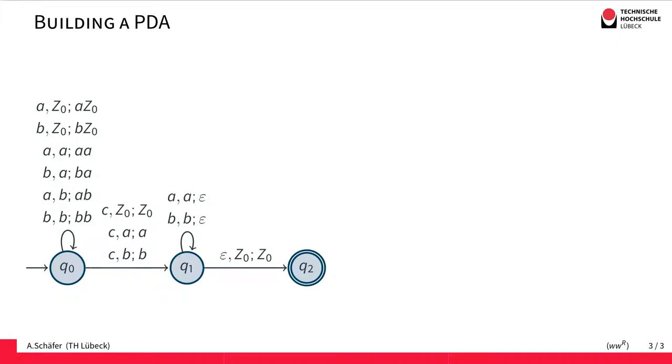Let's consider an example. We consider one word from the input. I'll simply write down the configurations, the instantaneous descriptions. So initially, we are in state Q0. The word we will be looking at is ABCBA. And we have Z0 on the stack. Then first step would be we stay in Q0 and we consume the A. So the rest is BCBA and we have put it on the stack. So we have an A and Z0 on the stack.